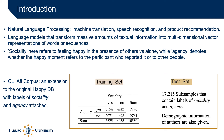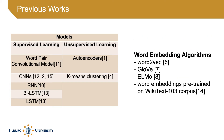There are 17,215 subsamples in the test set that also contain these labels, along with demographic information of the authors. Various embedding algorithms were also employed in this task, including Word2Vec, GloVe, ELMo, and word embeddings pre-trained on the WikiText-103 corpus.